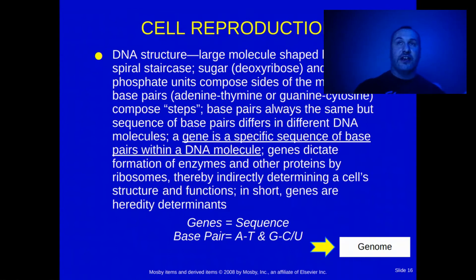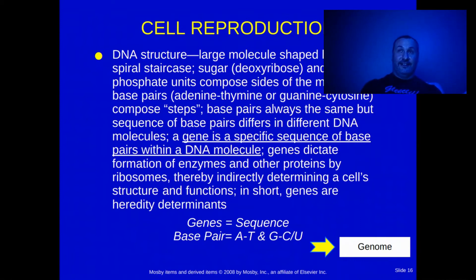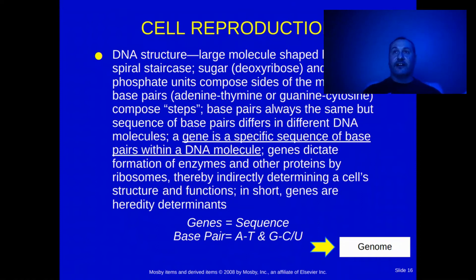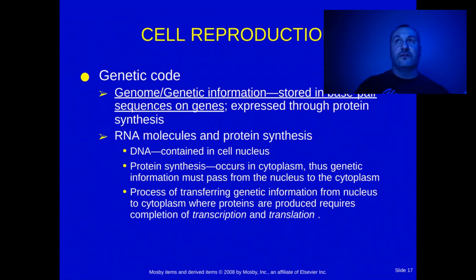Remember when scientists cracked the genome — that was a huge deal, around the early 90s. The big deal was that they finally figured out the sequence of A, T, G, and C base pairs. The organization of those amino acids is what makes us all different. The genome is the genetic information stored in the sequence of base pairs.